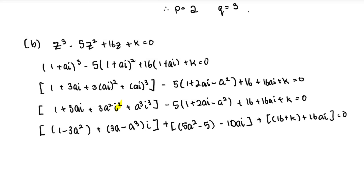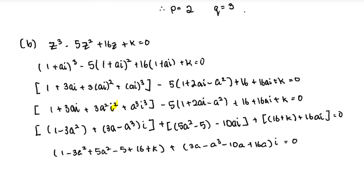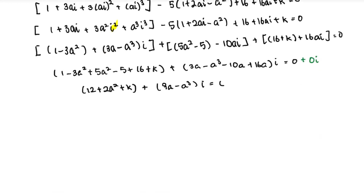Grouping gives: real part: 12 + 2a² + k = 0, and imaginary part: 9a − a³ = 0. Setting this equal to zero plus zero i, we can now compare coefficients of the real and imaginary parts separately to find a and k.